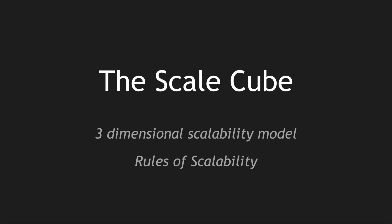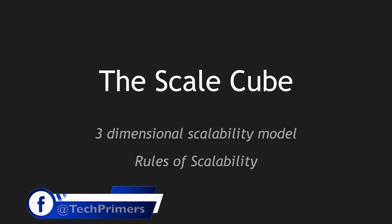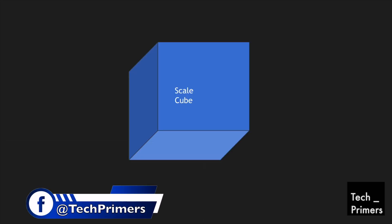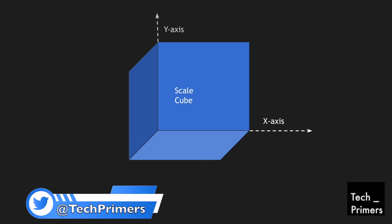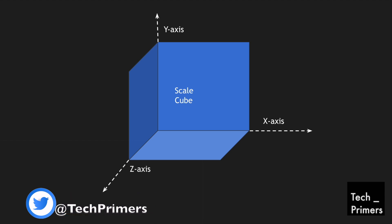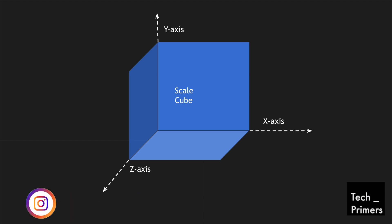As the name suggests, I'm going to use a three-dimensional cube in order to define our scalability rules. I'm going to use one particular axis as the x-axis, the one going up as the y-axis, and the one coming down as the z-axis. These are the different dimensions I'm going to use to explain the scalability factor.